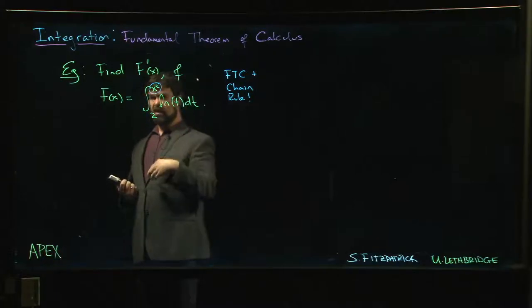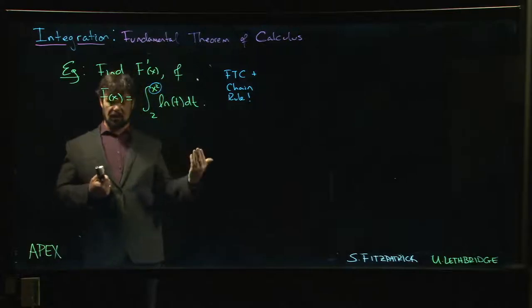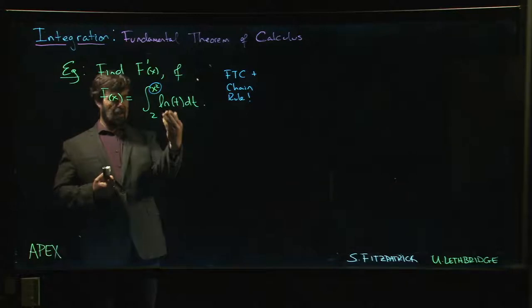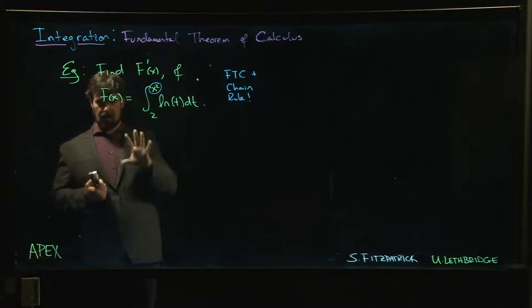We did see an example—if you look way back, I think in the product rule section of the derivatives, you will find an example where we took the derivative of something that came out to be exactly the natural log. So yeah, if you can go back and find that example you could do it that way, but the point is not to do it that way. The point is to find a better way to do this.